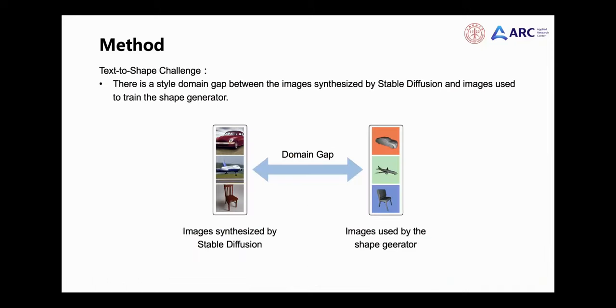In the stage of 3D shape prior generation, it is difficult to obtain the correct shape by directly using images generated by existing text-to-image diffusion models as inputs to the shape generator. This is because the images generated by the text-to-image diffusion model have more complex textures and backgrounds, while the images used to train the shape generator are relatively simple rendering images, resulting in an obvious style-domain gap between them.